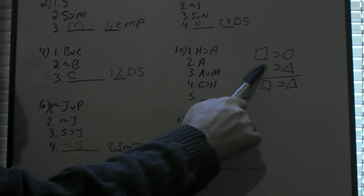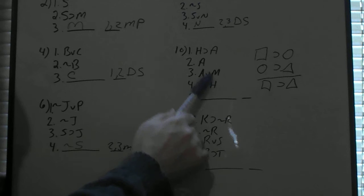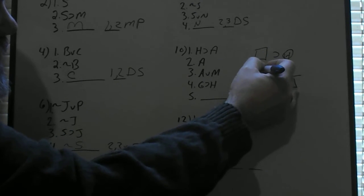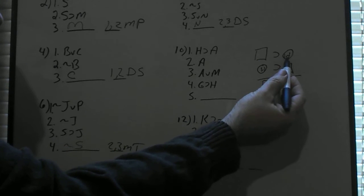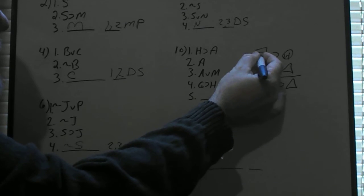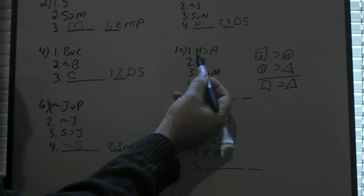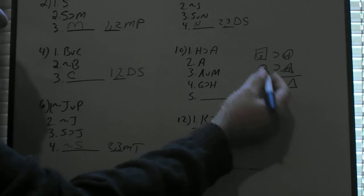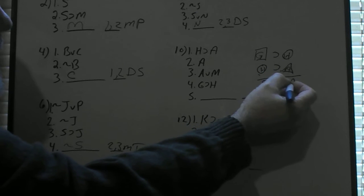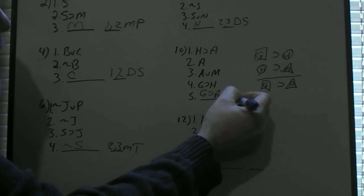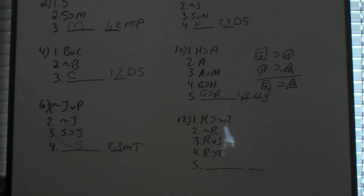The middle term — the circle — has to match up correctly. The line where H is the consequent is line 4: G then H. The line where H is the antecedent is line 1: H then A. So the square is G and the triangle is A, giving us 'if G then A' derived from lines 1 and 4 through hypothetical syllogism.